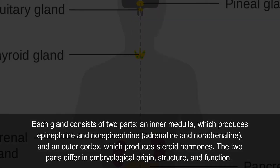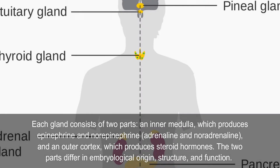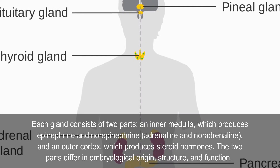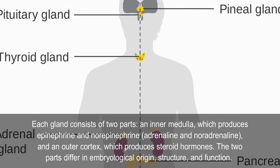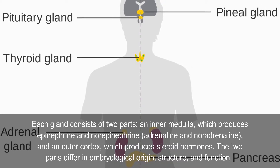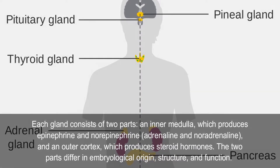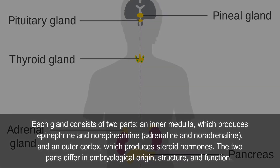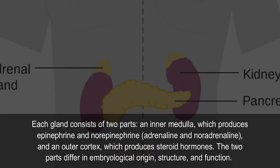Each gland consists of two parts: an inner medulla, which produces epinephrine and norepinephrine (adrenaline and noradrenaline), and an outer cortex, which produces steroid hormones. The two parts differ in embryological origin, structure, and function.